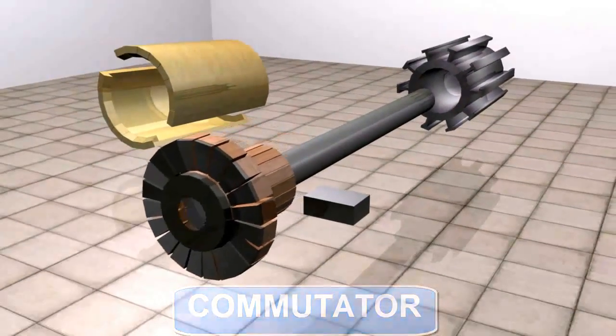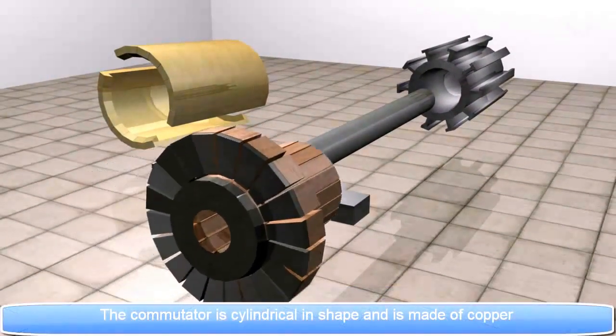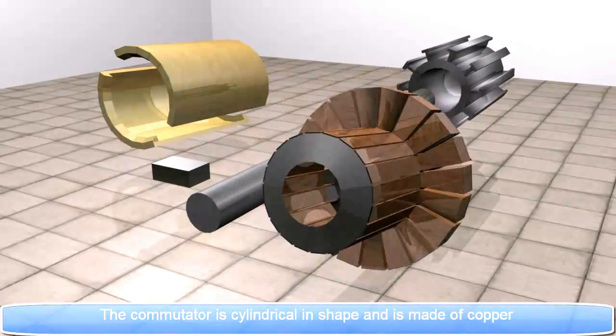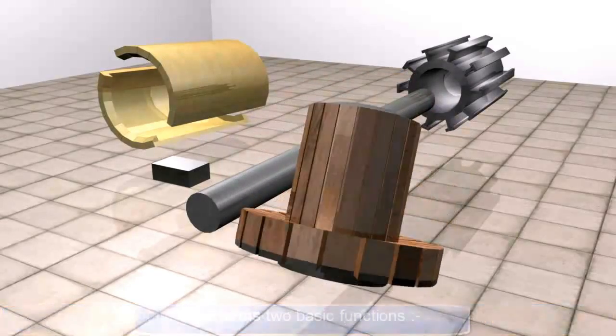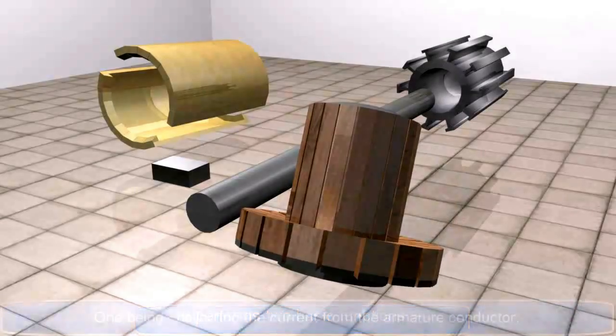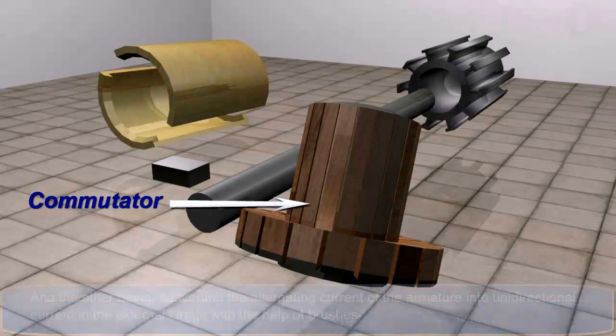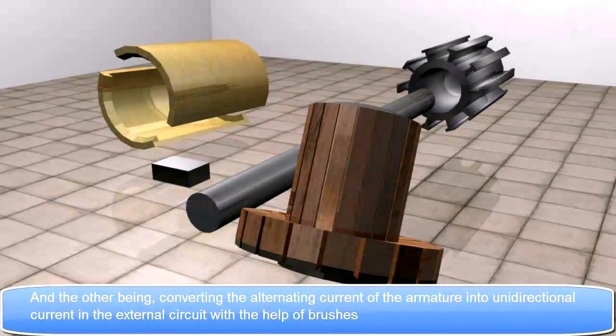Commutator. The commutator is cylindrical in shape and is made up of copper. It performs two basic functions. One being collecting the current from the armature conductor. And the other being converting the alternating current of the armature into the unidirectional current in the external circuit with the help of brushes.